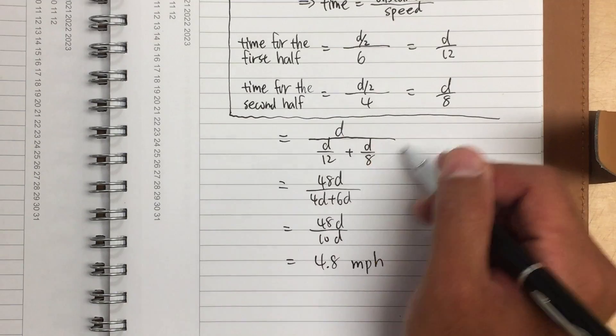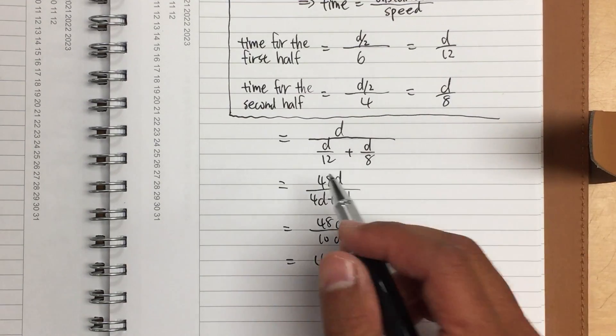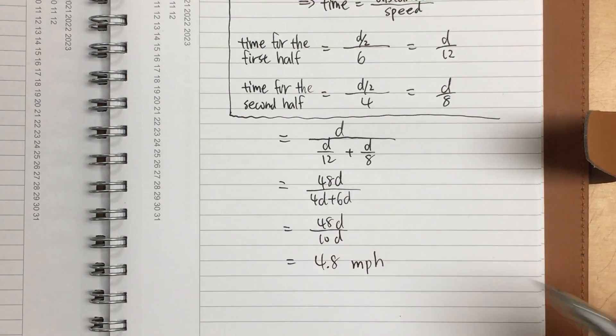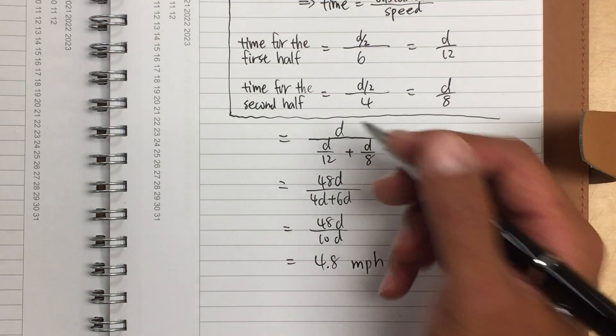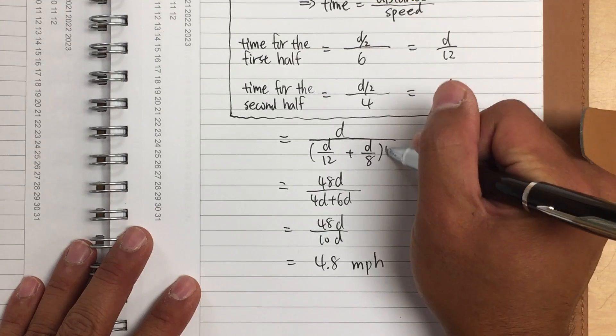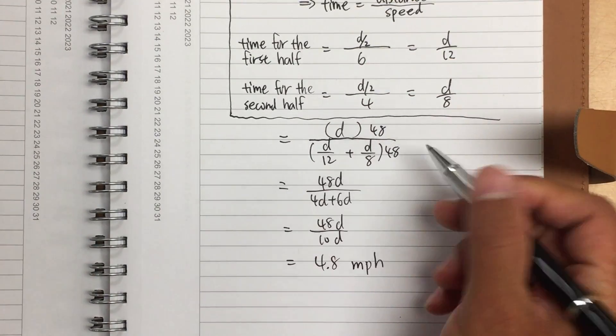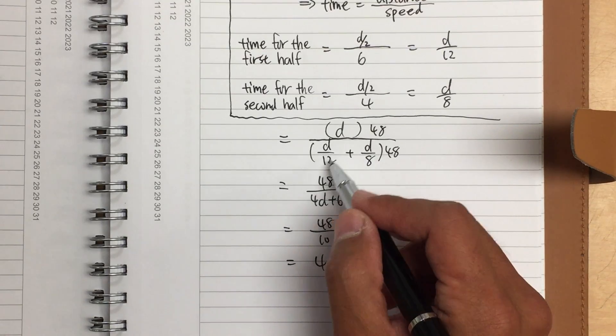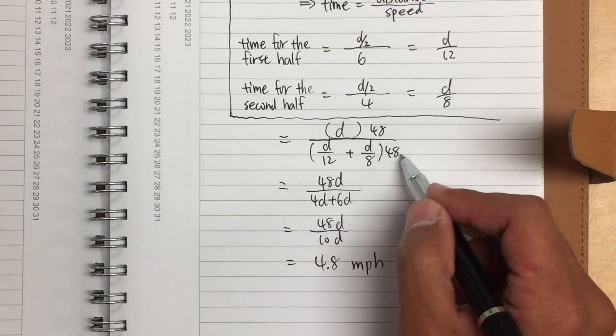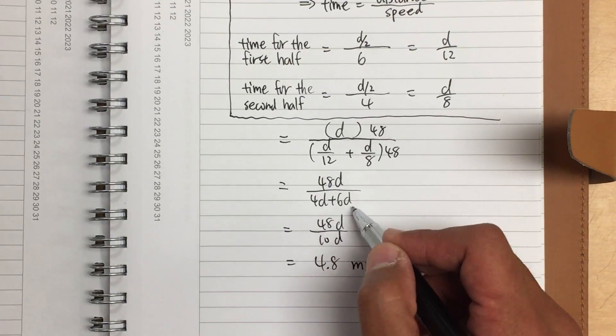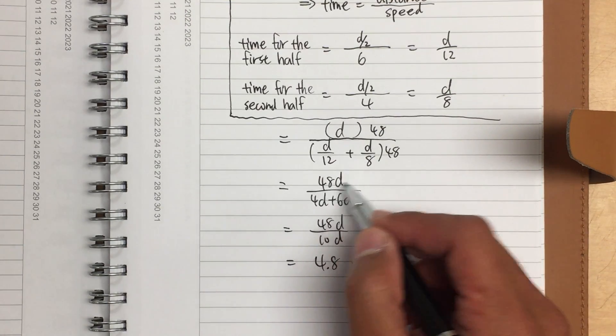And now, this is a complex fraction. How can I simplify this? Well, 12 and 8, I know the lowest common multiple of these two numbers, it will be 48, right? So let's multiply the bottom and the top by 48. So this way, we can get rid of this. You see, 48 times d over 12, it will be just 4d. 48 times d over 8, it will be 6d. And then 48 times d will be 48d on the top.